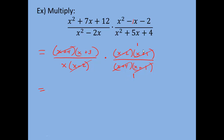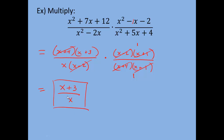x plus 3 times 1 is just x plus 3, and the denominator is x times 1, which is just x. So the answer is x plus 3 divided by x. You can't simplify this any further — the x is connected to the 3 by a plus sign, so it's not allowed to cancel with the x in the denominator. Cancellation only works when there's multiplication, not addition. So the final answer is x plus 3 over x.